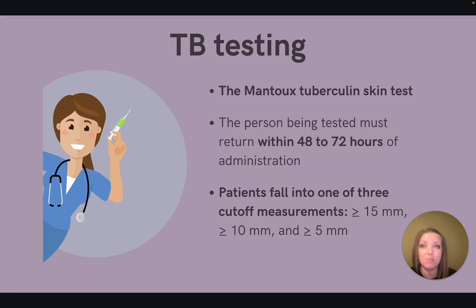Let's review the TB skin test, which is also called the Mantoux tuberculin skin test. This test is performed by injecting a small amount of fluid called tuberculin into the skin, typically on the inside of the forearm. The patient must return within 48 to 72 hours to have the healthcare worker look at the location where the injection was administered. The result depends on the size of the induration of the area of injection. Induration refers to the area that presents as a raised or hardened area in the skin, and this is measured and reported in millimeters.